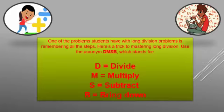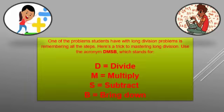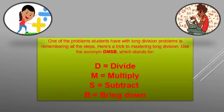Now see the four steps. Using these steps, you can divide any number. The first letter we use is capital D — D stands for Divide. The second letter is M — M stands for Multiply. The third letter is S — S stands for Subtract. And the last is B — B stands for Bring down.